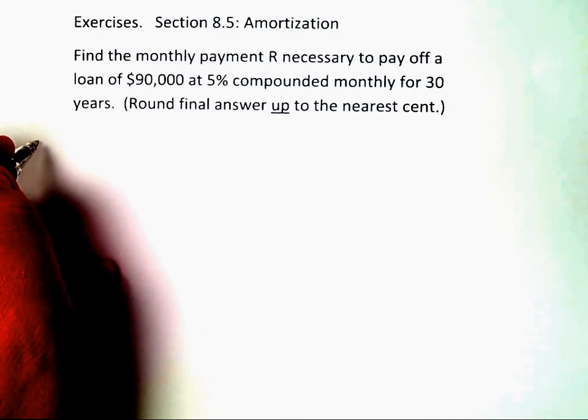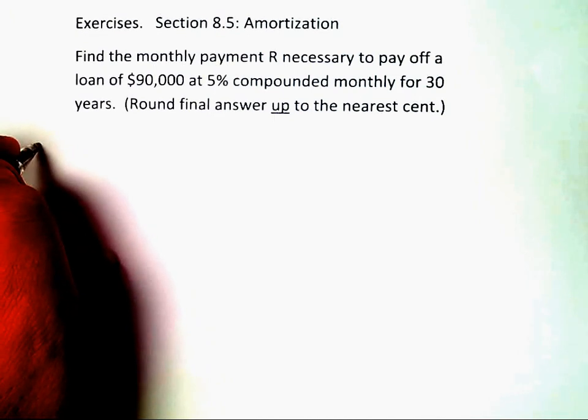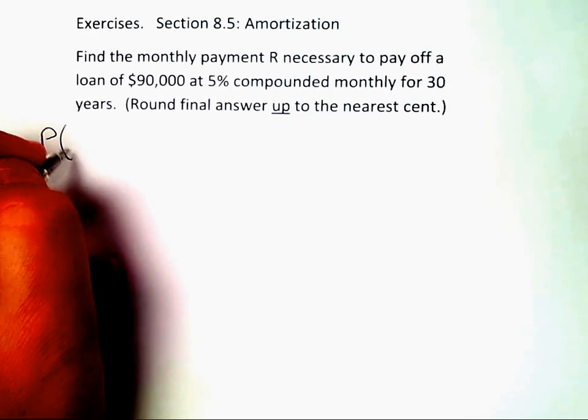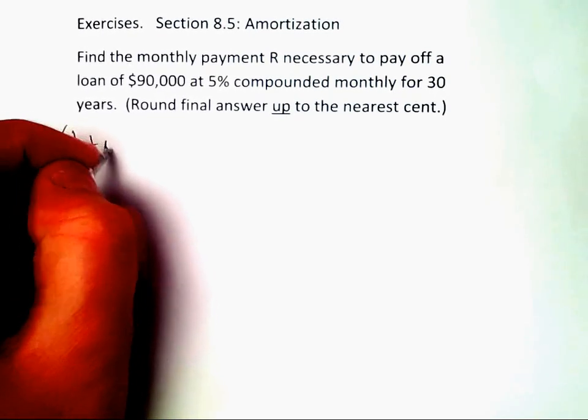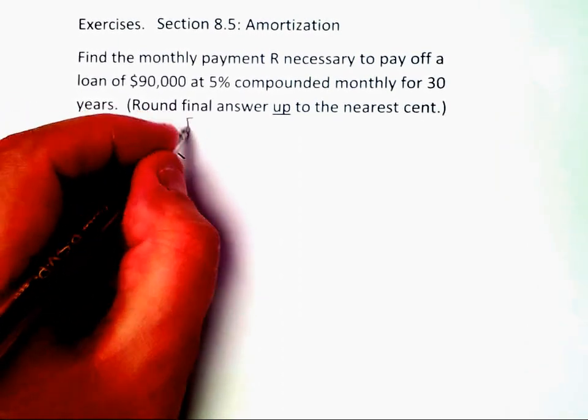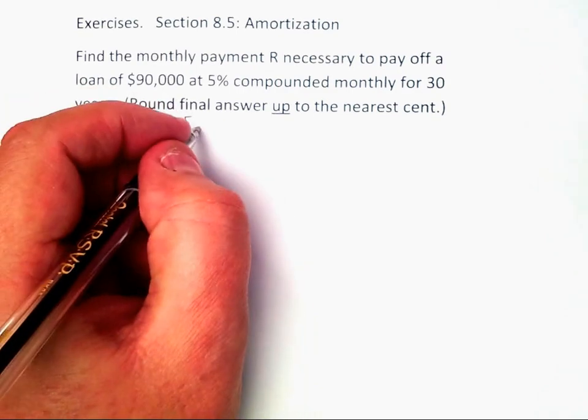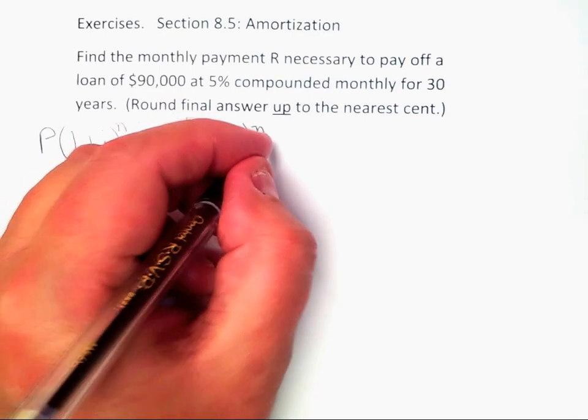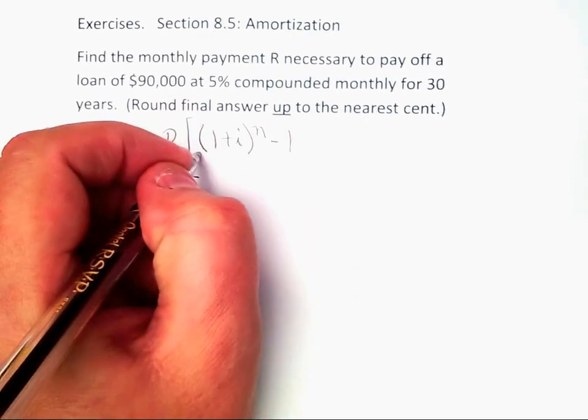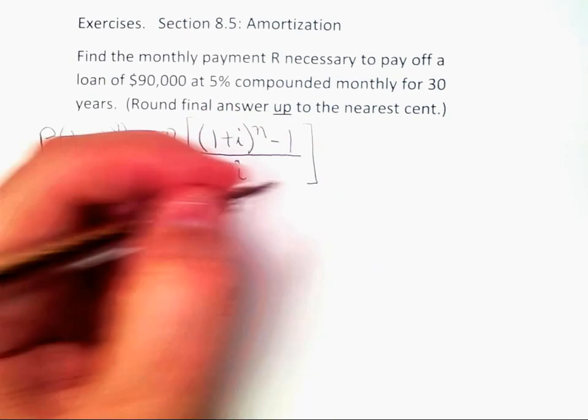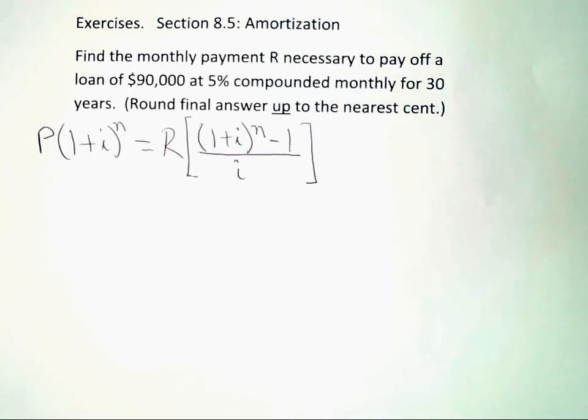Because this is a compound interest loan payment problem, we know the formula is capital P times the quantity 1 plus i to the n equals capital R times the quantity 1 plus i to the n minus 1, all over i. That's the formula for calculating monthly payments in a compound interest loan.